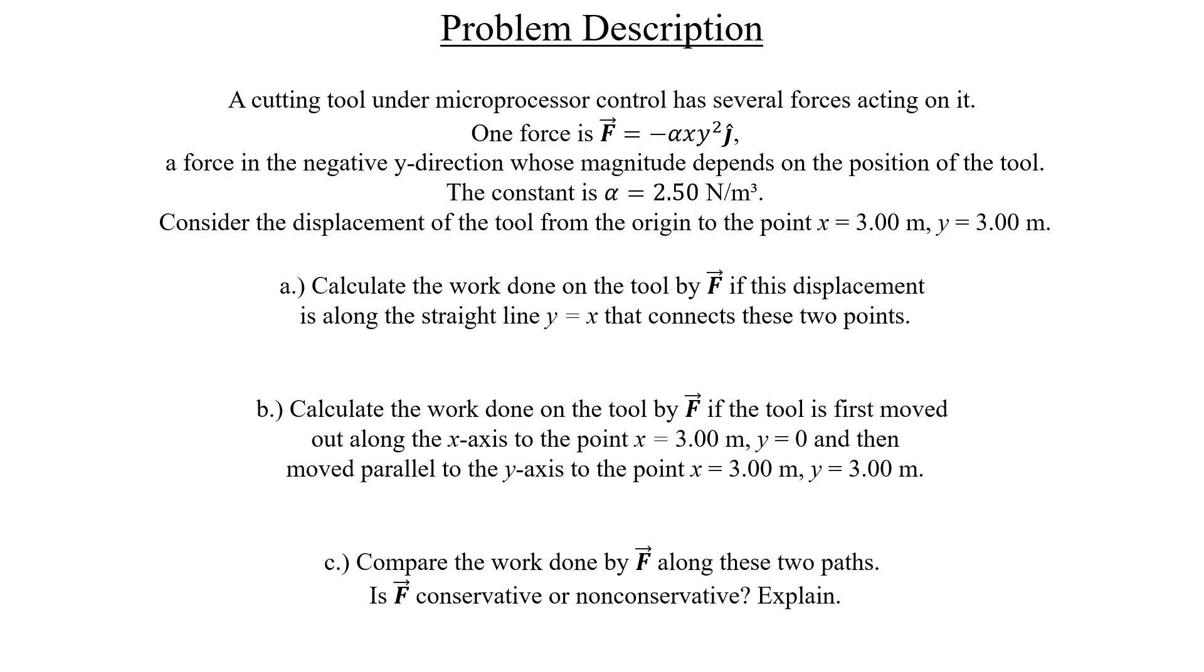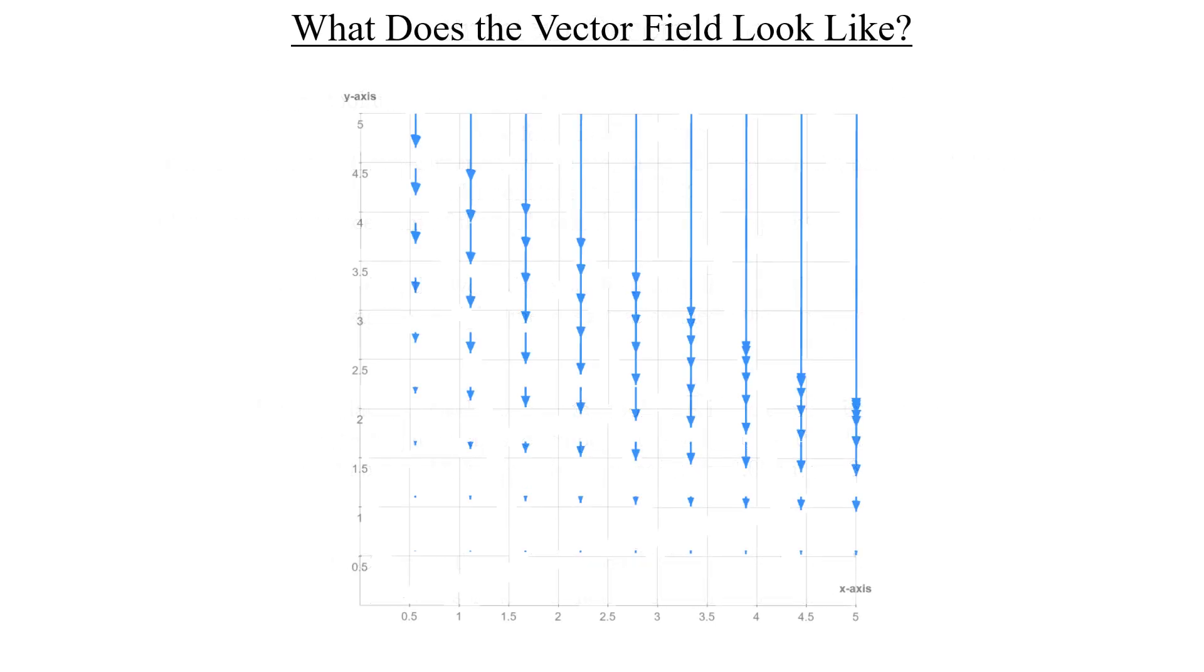Before calculating anything, let's get a sense of what this vector field looks like. Since the force only has a negative J component, all of our vectors will point in the negative Y direction. Notice that if we start at some positive constant value of Y, like Y is equal to 1 here, and we move in the plus-X direction, the force on the tool increases linearly, as represented by the size of the arrows.